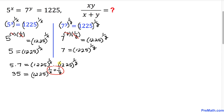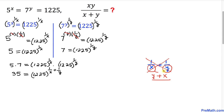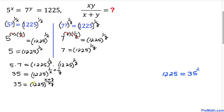Now let's focus on the exponent part: 1 over x plus 1 over y. Using the crisscross method to add these fractions: 1 times y gives y, plus 1 times x gives x, divided by x times y. So the equation becomes 35 equals 1225 power (x plus y) divided by (x times y).